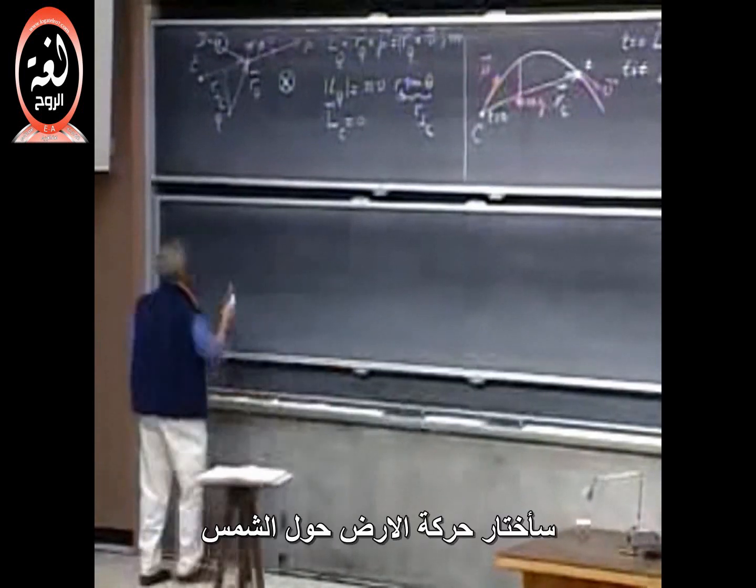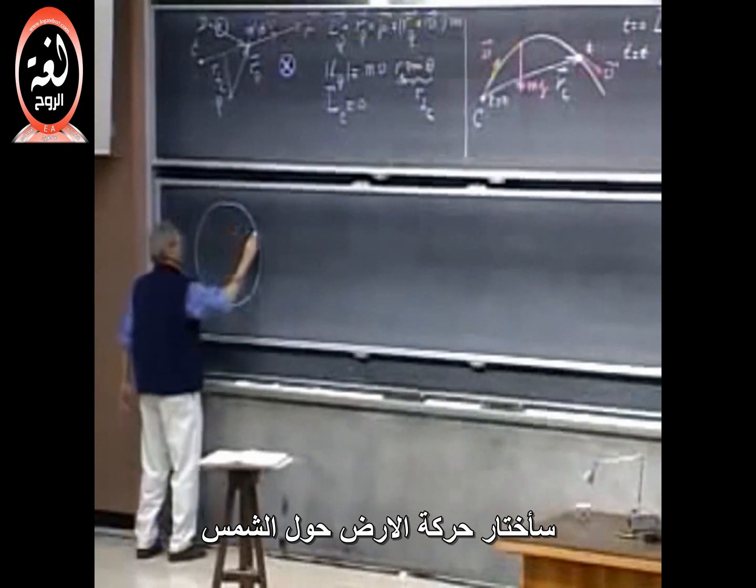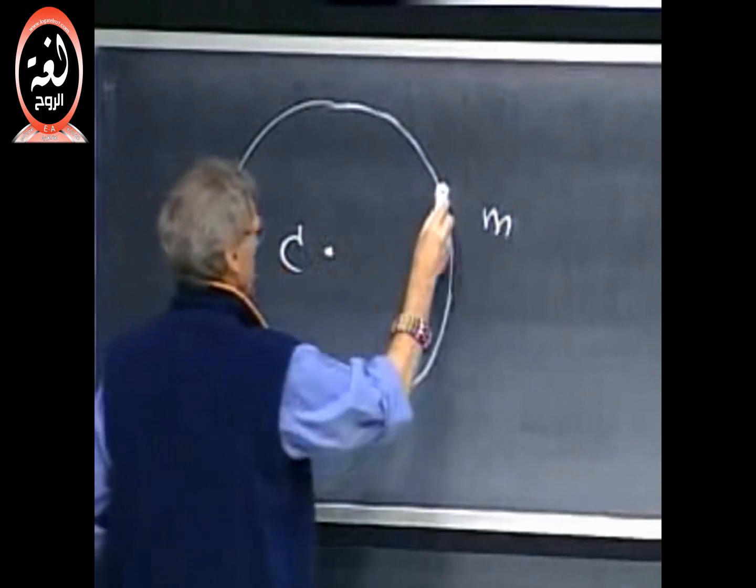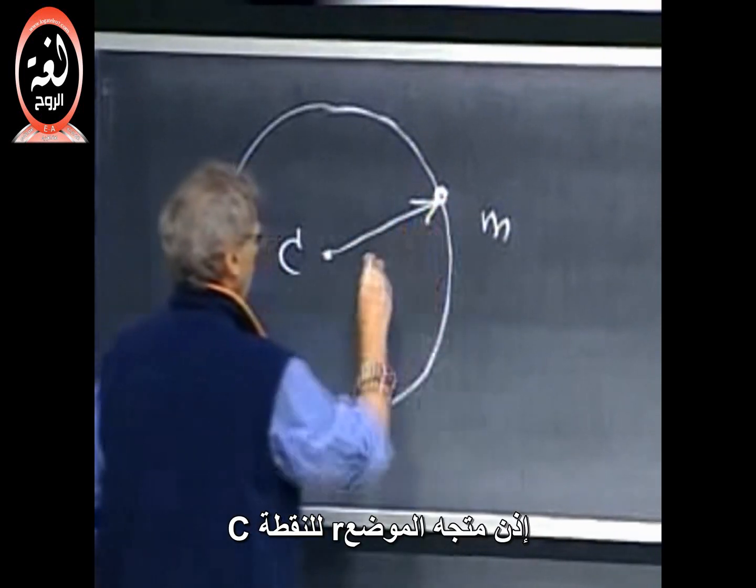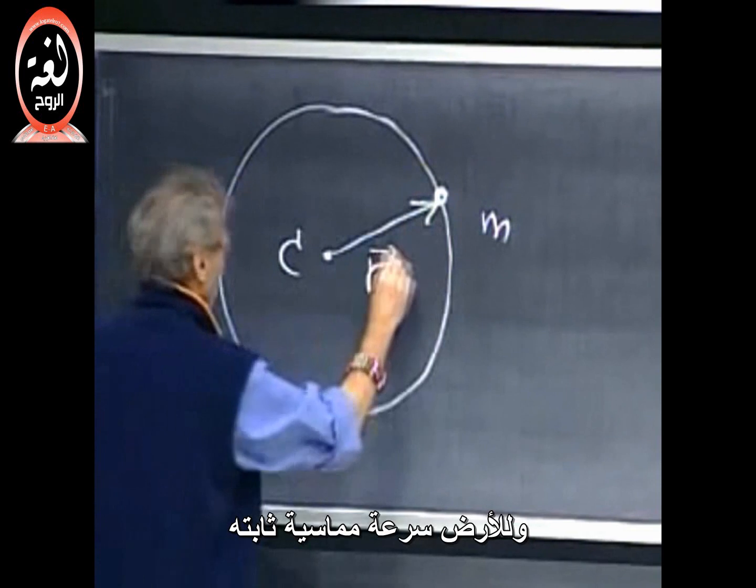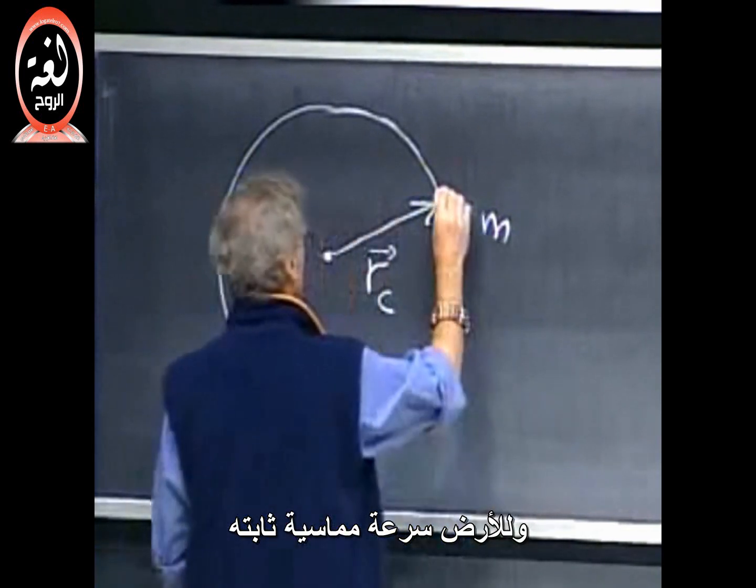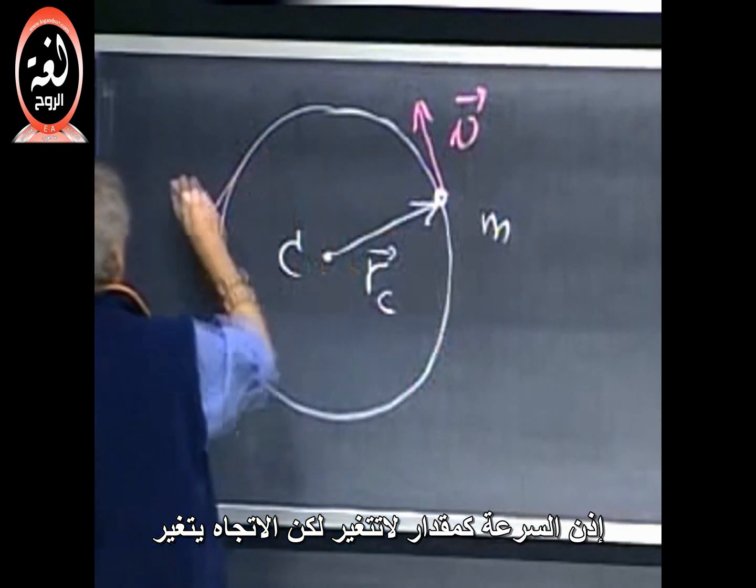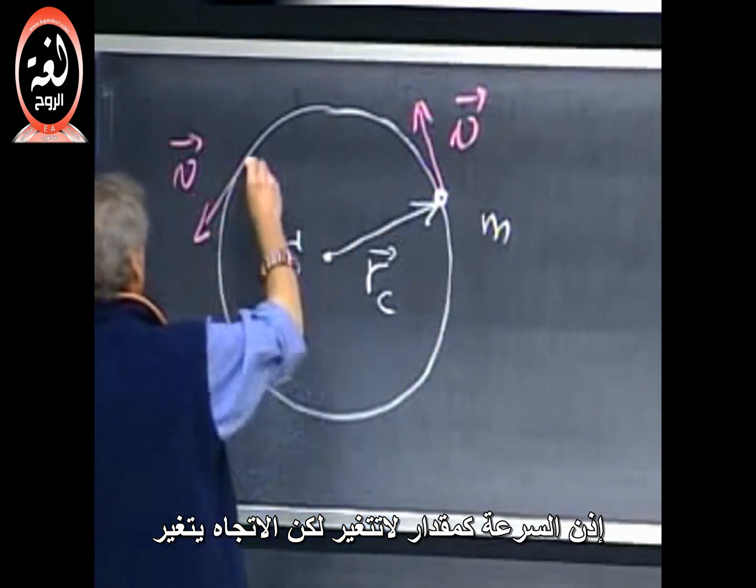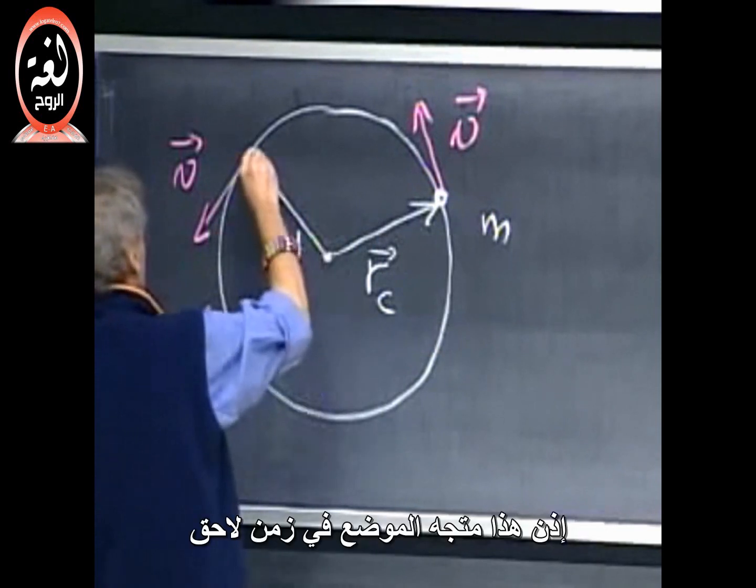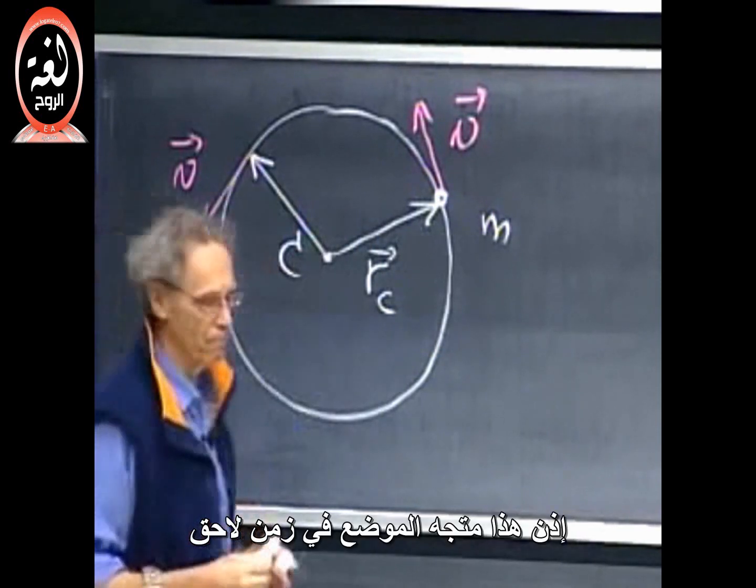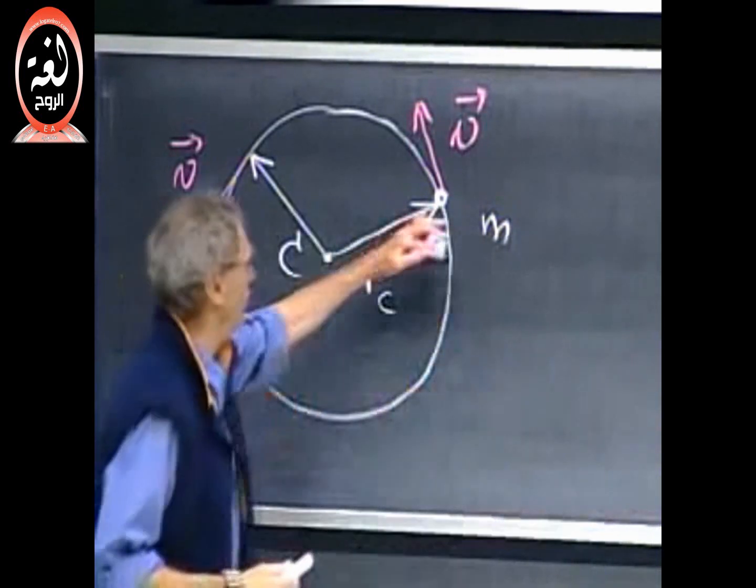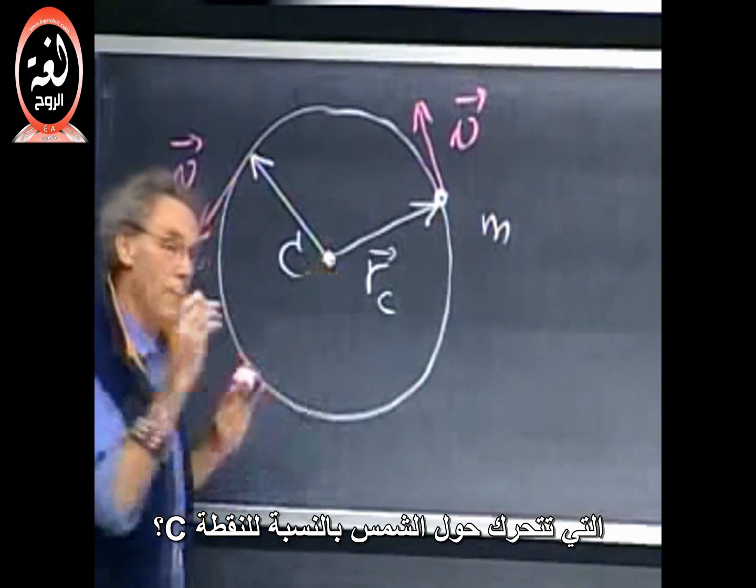I choose the Earth going around the Sun. Here is the Earth with mass M. At point C here is the Sun. This is the position vector R of C. And the Earth has a certain tangential velocity. And the speed never changes, but the velocity does change. So this is the position vector at a later point in time. What now is the angular momentum of the Earth going around the Sun relative to point C? I pick C now.